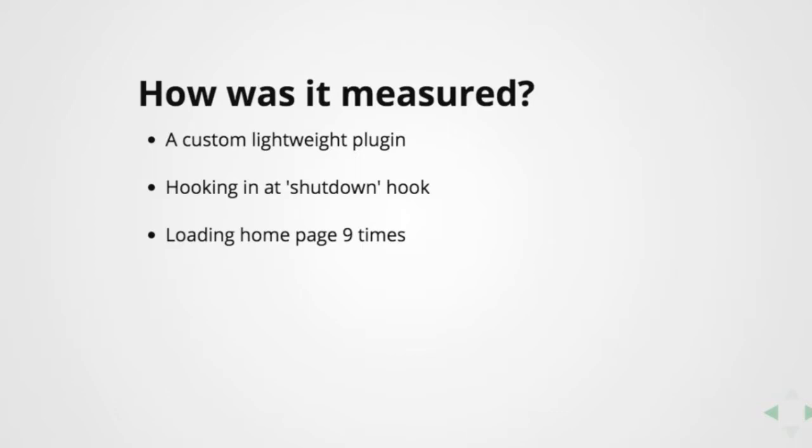For measurement, I first considered using Query Monitor since it was already counting all that stuff, but I wanted something more lightweight, so I built a custom one. It runs everything at the shutdown hook — that's pretty much the last thing you can do in WordPress. I was loading the homepage of the blog nine times, measuring all this stuff, and storing it into a CSV file. When calculating results, I discarded the biggest and smallest values to eliminate flukes, and took the average of the remaining seven.